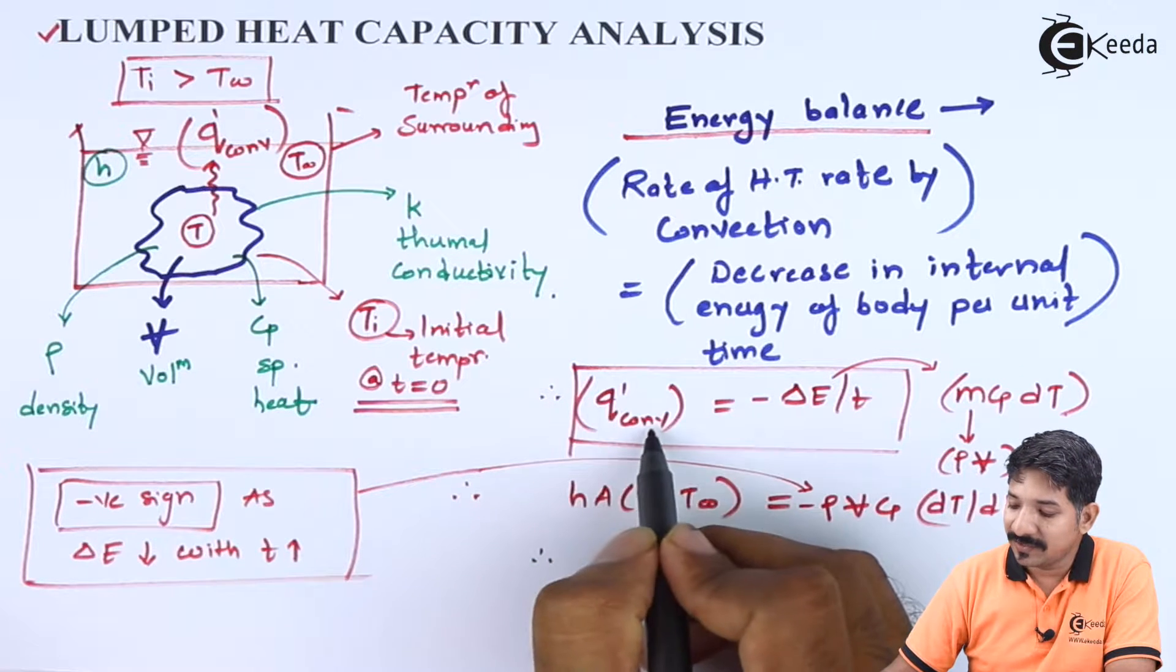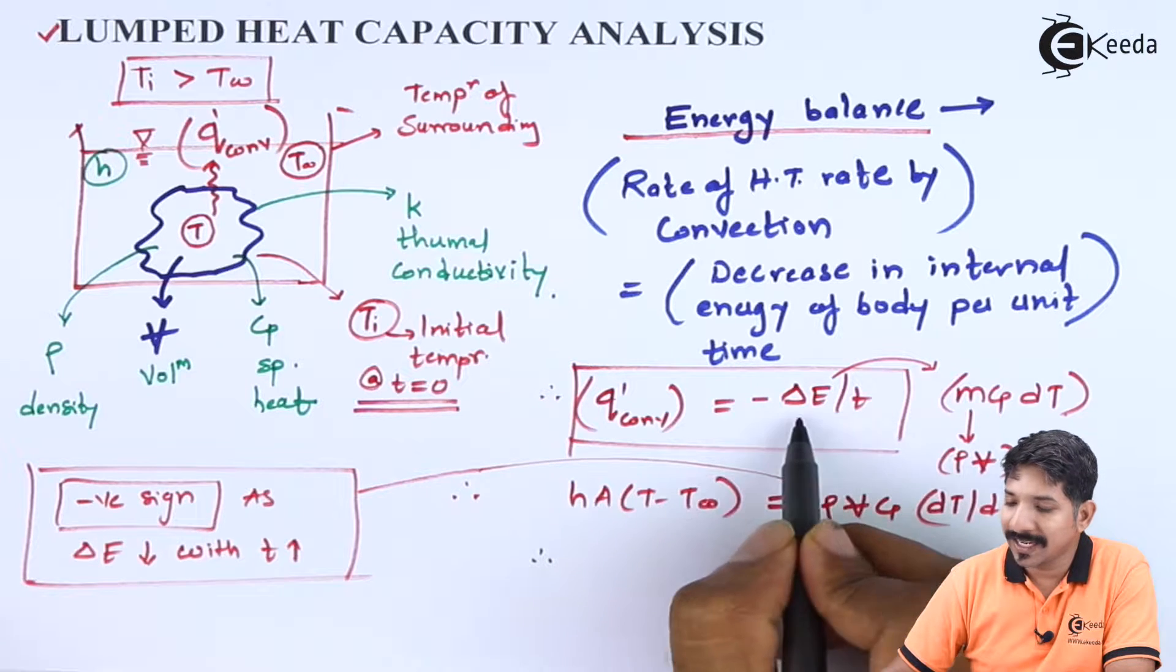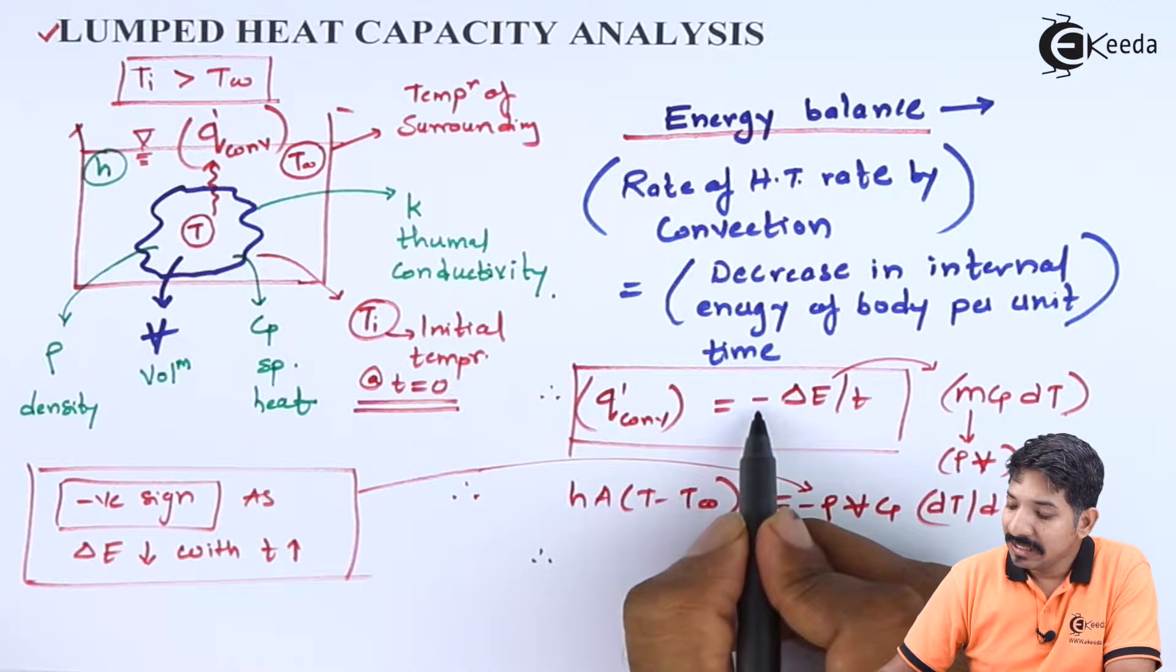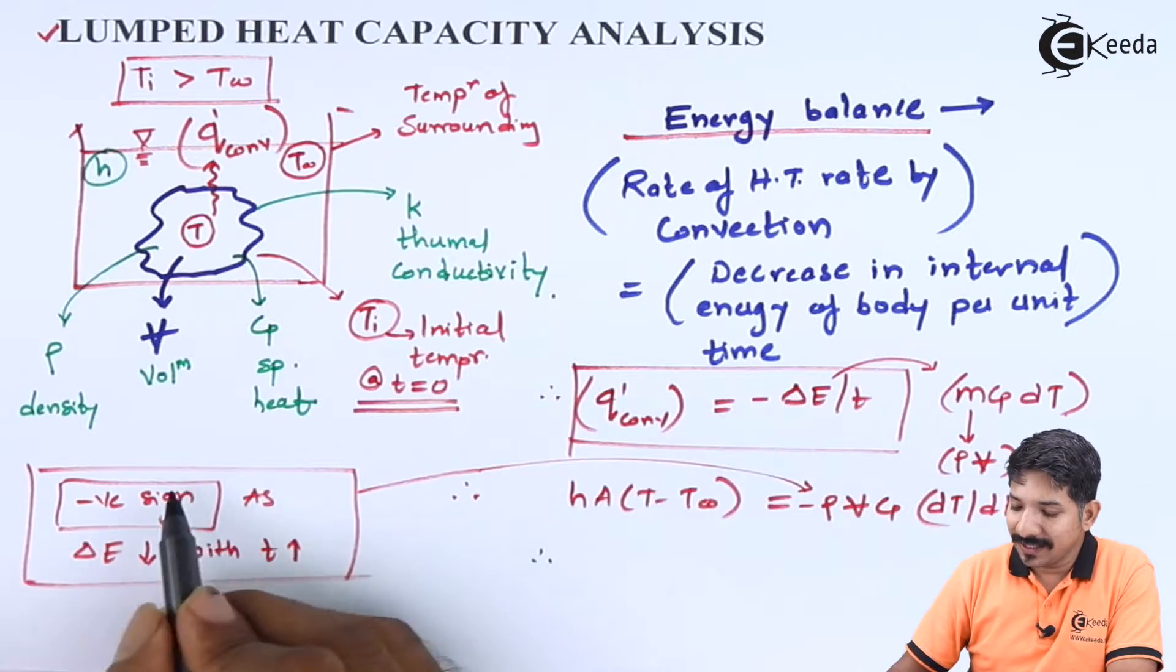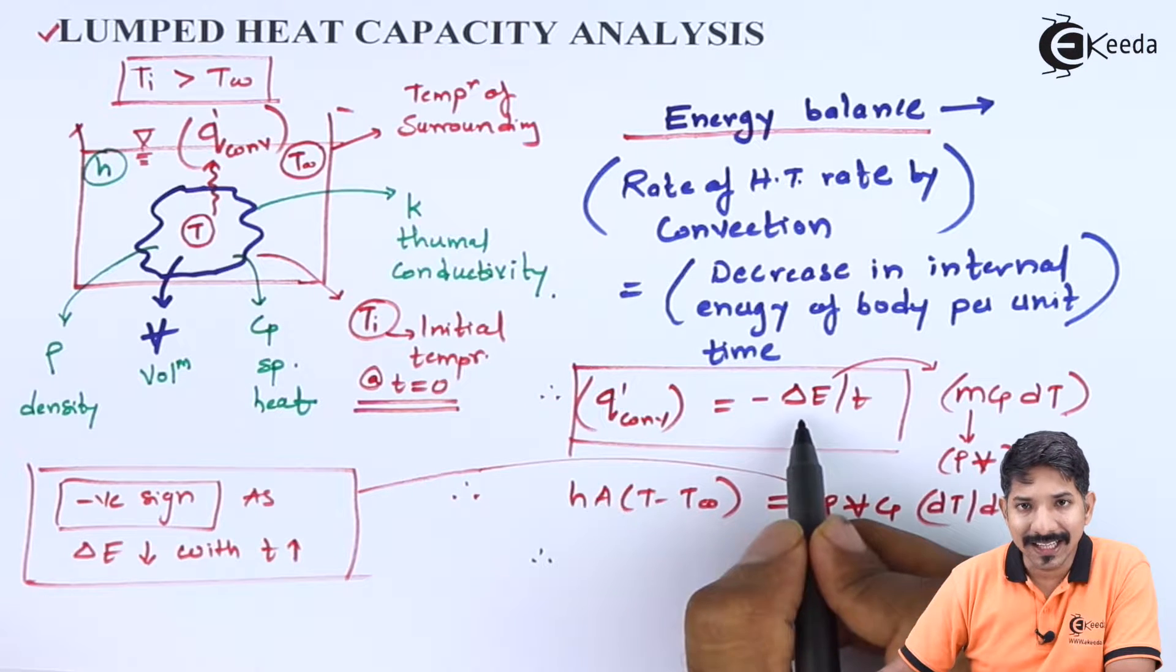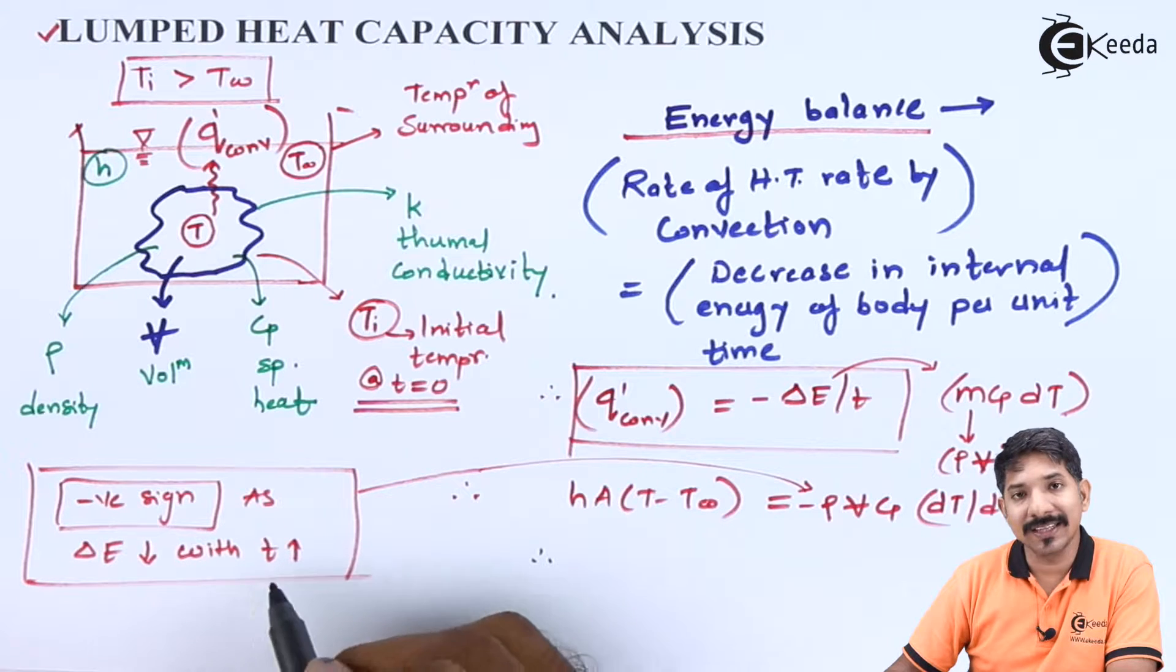Now the Q' of convection is given in terms of kilowatt. Here also we are talking about energy per unit time, that is kilojoule per second, which is kilowatt. The negative sign which is present over here is responsible as the delta E, that is the internal energy, is always decreasing with increase in the time.